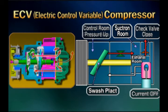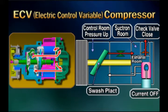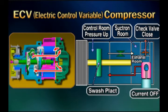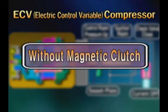When ECV is off, the oblique angle of the swashplate operates at zero degrees. Therefore, coolant circulation is stopped — that is, compressor operation is off. As a result, it is not required to control compressor on/off using a magnetic clutch.